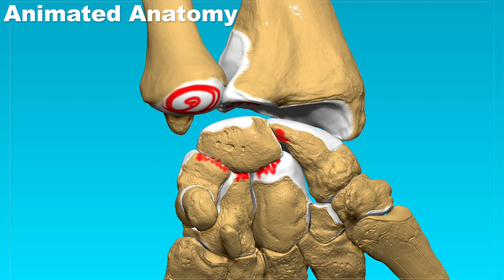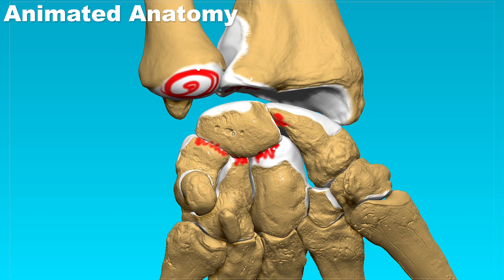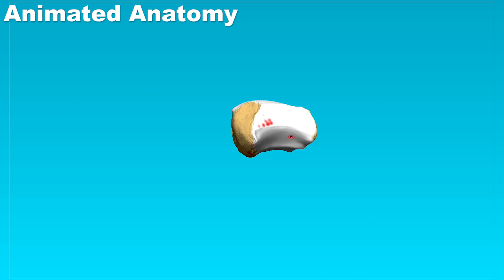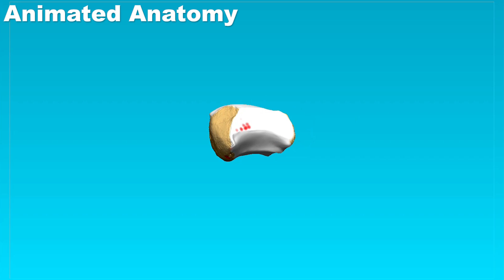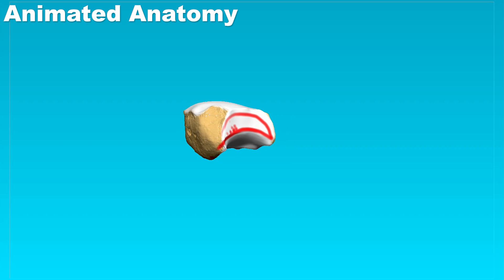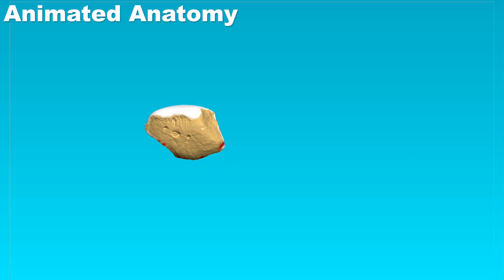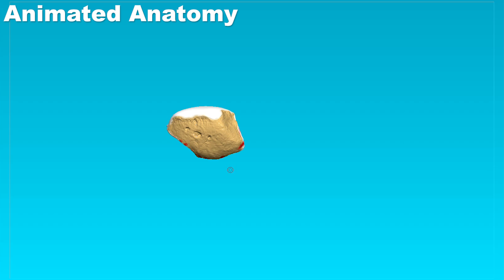Now why is this bone called lunate? Well, if you actually look at this bone from this perspective, you will notice that it resembles a moon — a sickle moon. This bone is called lunate because luna in Latin means the moon, or the sickle moon.